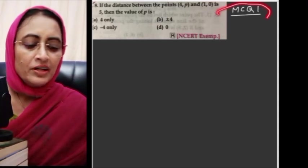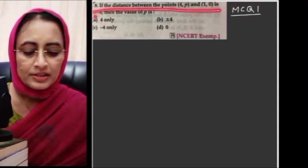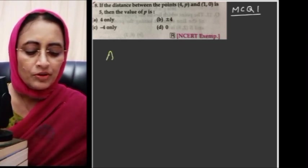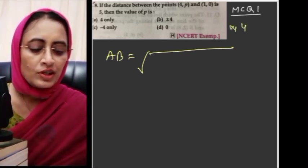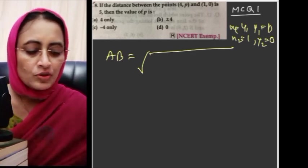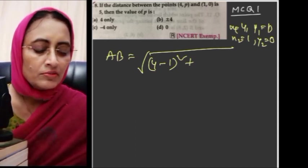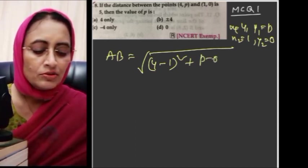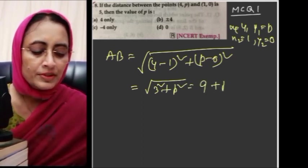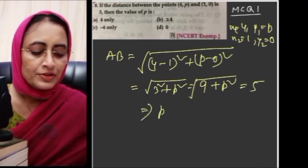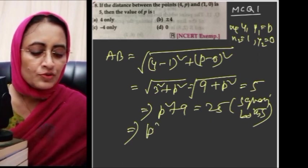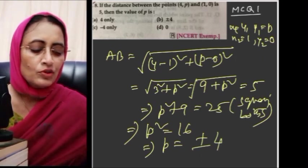MCQ number 1: If the distance between the points (4, p) and (1, 0) is 5, then the value of p is — let's apply the distance formula directly. x1=4, y1=p, x2=1, y2=0. So AB equals square root of (4 minus 1) whole square plus (p minus 0) whole square, which is square root of 9 plus p square equals 5. Squaring both sides: p square plus 9 equals 25, so p square equals 16, therefore p equals plus minus 4.